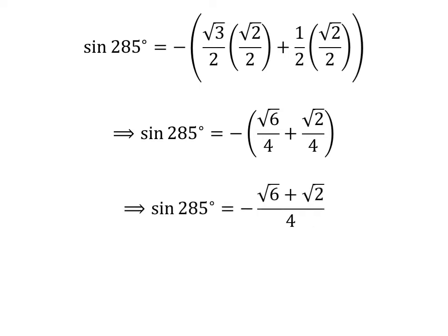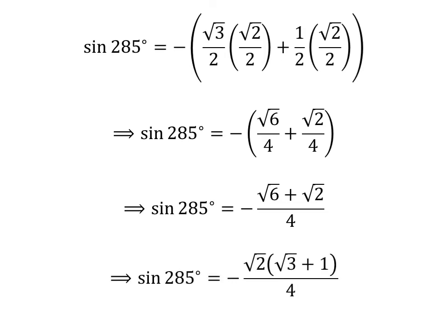As the denominator of both fractions in the above expression is the same, sine of 285 degrees is equal to minus times the quantity square root of 6 plus square root of 2, over 4. Taking out the common factor square root of 2 in the numerator gives us sine of 285 degrees is equal to minus square root of 2 times the quantity square root of 3 plus 1, over 4.